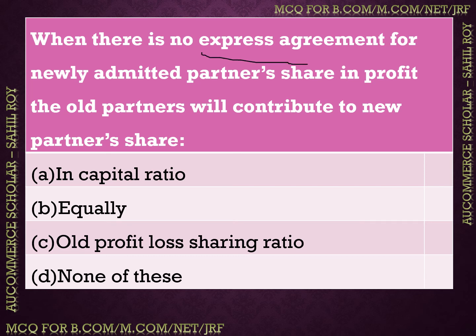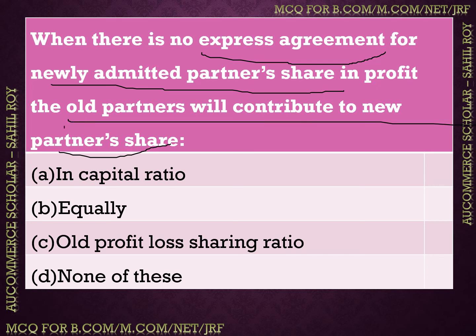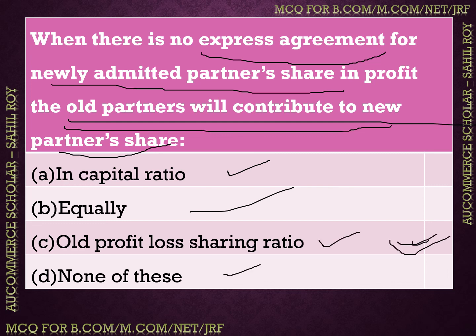When there is no express agreement for a newly admitted partner's share in profit, the old partners contribute to the new partner's share. On which basis do they contribute? Options: (A) capital ratio, (B) equally, (C) old profit and loss sharing ratio, (D) none of these. The correct answer is old profit and loss sharing ratio — the existing partners sacrifice in their old profit and loss sharing ratio.